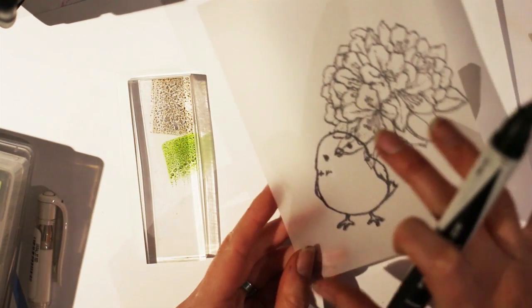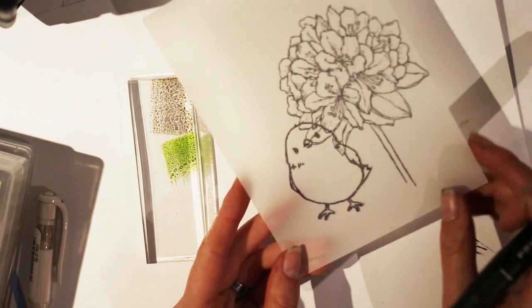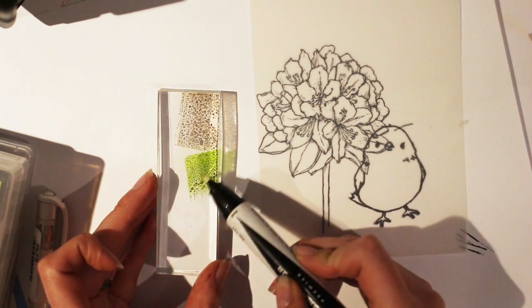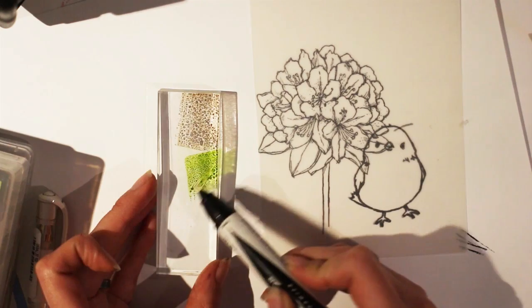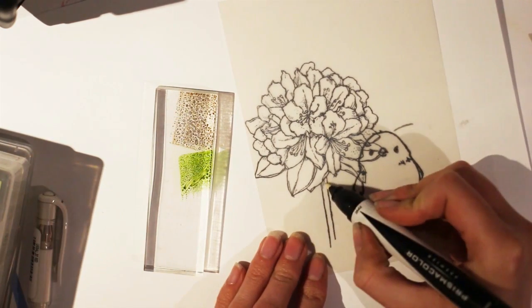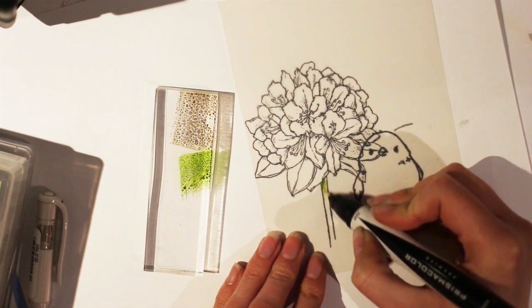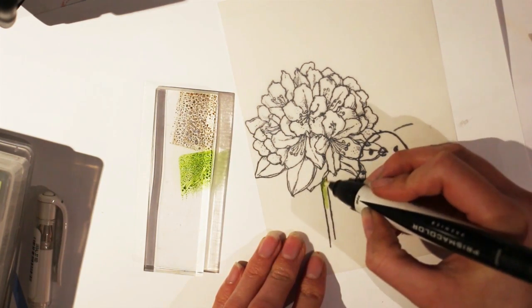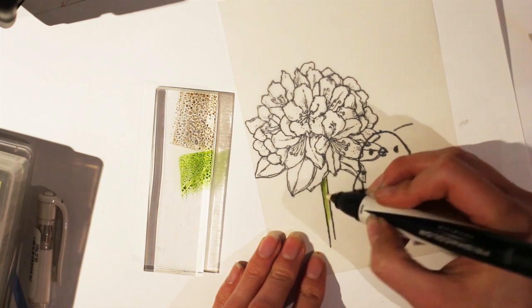Anyway, so the vellum, you're going to paint on the opposite side you stamped on. So make sure you turn it over before you get started. I've never actually tried to paint on the front side of this. It might work. So you can try that and let me know how that goes. But I like the clean effect you get from painting the back.